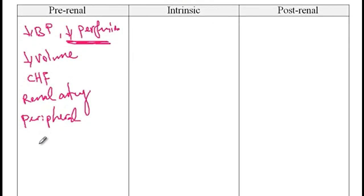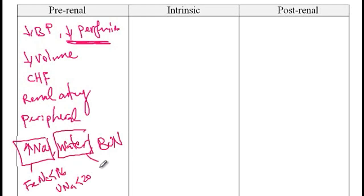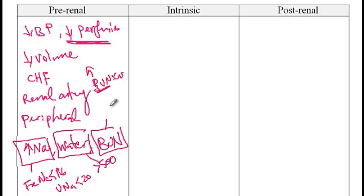These patients present with oliguria but have normal kidney function. Since the kidneys are functioning normally, they compensate for low perfusion by increasing reabsorption of sodium, water, and BUN. Therefore the fractional excretion of sodium is less than 1%, urine sodium is less than 20, urine osmolarity rises above 500, and since only BUN is reabsorbed while creatinine cannot be, the BUN to creatinine ratio is more than 20 to 1.